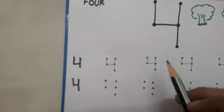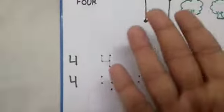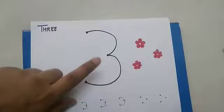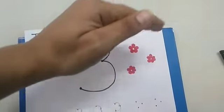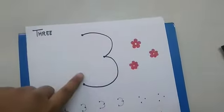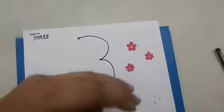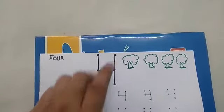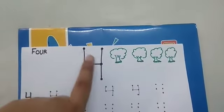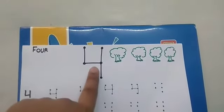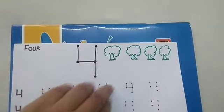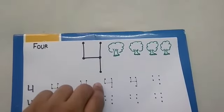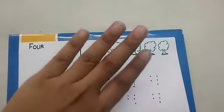Kids, you have to practice number 3 and 4 at home like this. 3, 3, 3 — let's climb a tree. 4, 4, 4 — kittens on the floor. Enjoy this activity and do practice of number 3 and 4 at home.